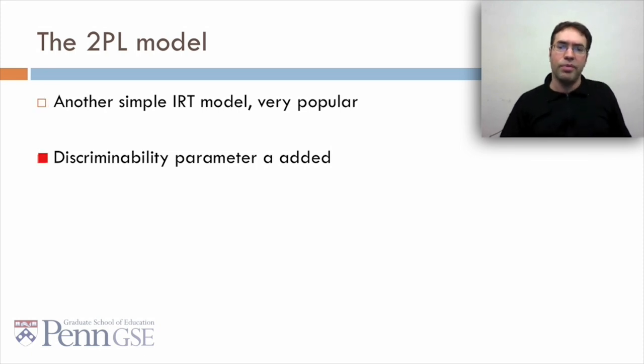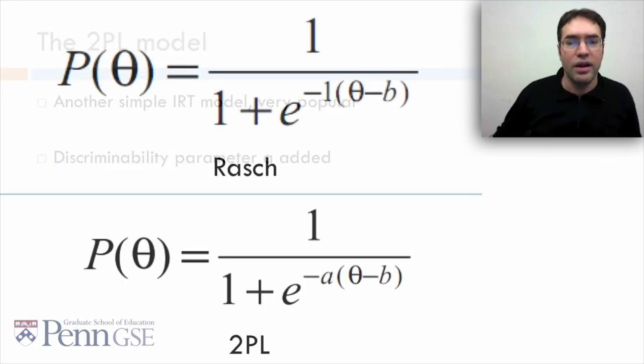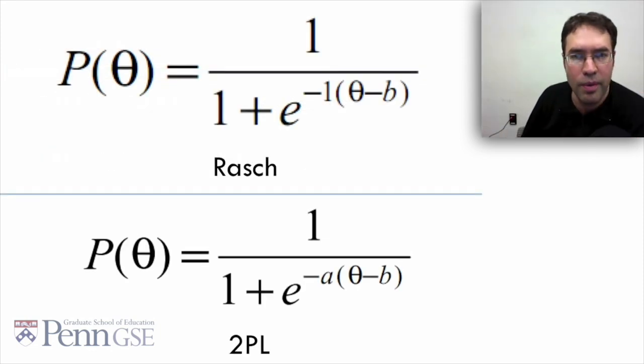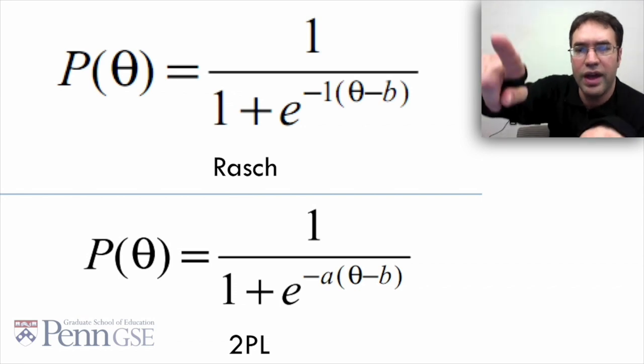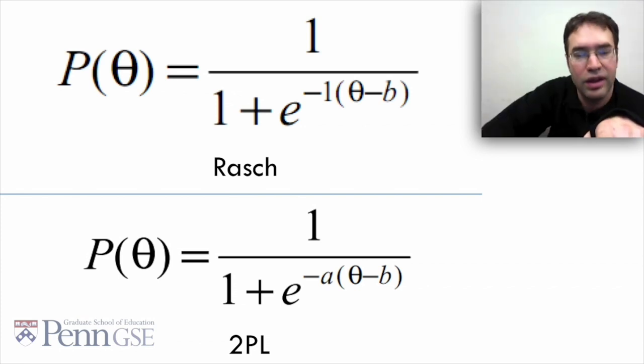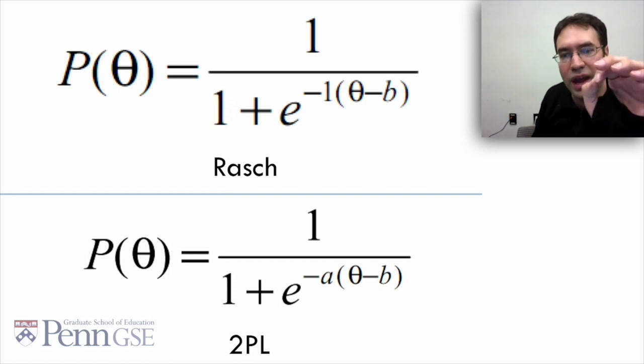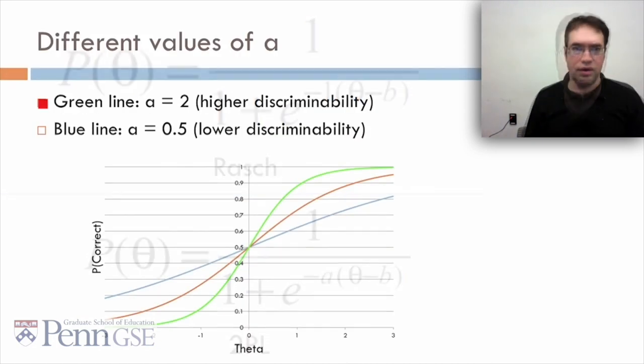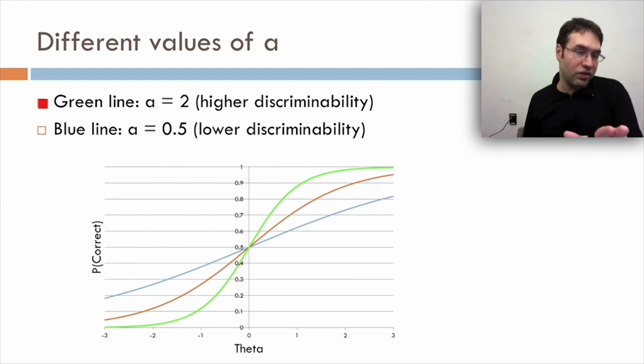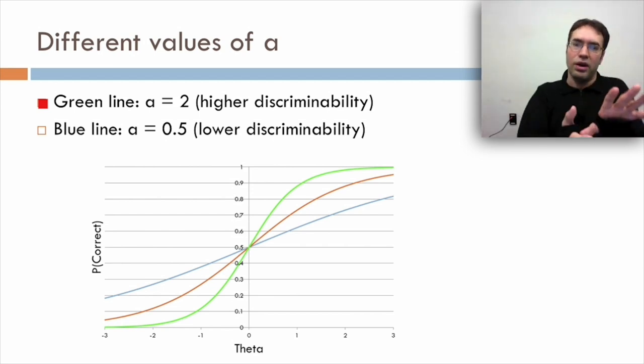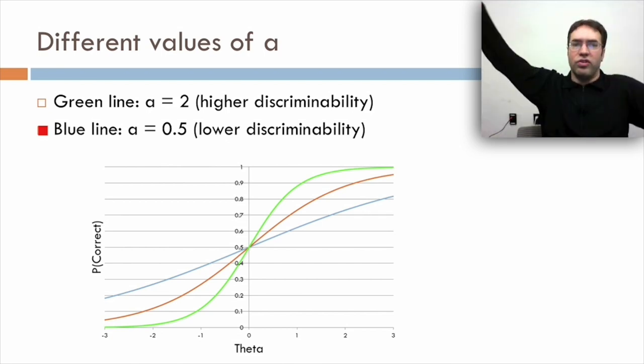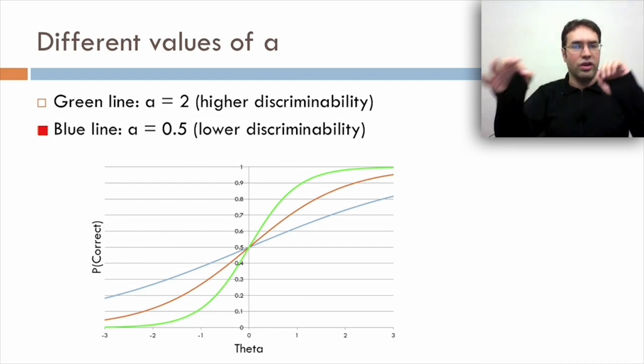Another simple IRT model that's pretty popular is the 2PL model. In this one, there's a discriminability parameter a added. If we look at the Rasch, we can see that the 2PL model is exactly like the Rasch except that negative one in the Rasch becomes negative a. So if you have a 2PL model where a equals 1, it's the Rasch model. Now if we look at different values of a, the green line has a equals 2, and that gives it higher discriminability. It's making a faster transition as students get better between being really hard and really easy. The blue line, a equals 0.5, has lower discriminability. It makes a much slower transition as students get better between correctness and incorrectness.